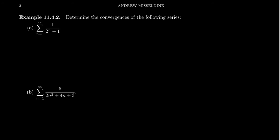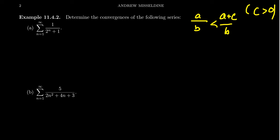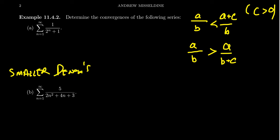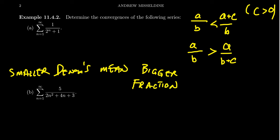Let's look at some examples. First, determine the convergence of the sum from n equals one to infinity of 1 over (2^n + 1). Remember: if you have a fraction and you make the denominator smaller by removing a positive value, the fraction gets bigger. Conversely, a bigger denominator makes the fraction smaller. This is important to keep in mind when working with comparisons.